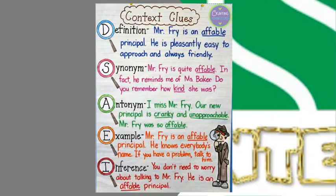Number three: antonyms. Antonyms are words that have opposite meanings, such as happy and sad. Here's an example: 'I miss Mr. Fry. Our new principal is cranky and unapproachable. Mr. Fry was so affable.' So the words 'cranky' and 'unapproachable' are antonyms of the word 'affable,' which means kind.